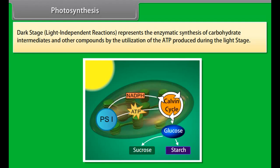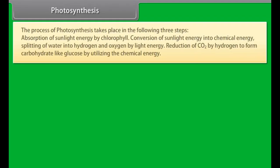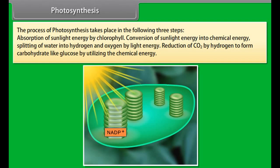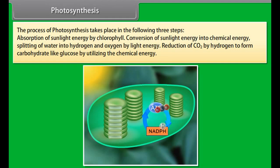Photosynthesis can be summarized by this equation. The photosynthetic process has been shown to be divided into two major phases: light stage and dark stage. Light dependent reactions represent conversion of radiant energy to chemical energy in the form of ATP. Light independent reactions represent the enzymatic synthesis of carbohydrate and other compounds by the utilization of the ATP produced during the light stage.